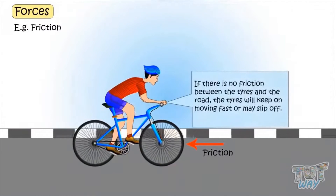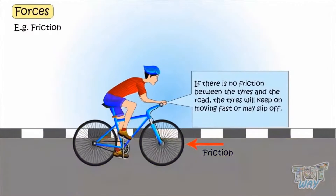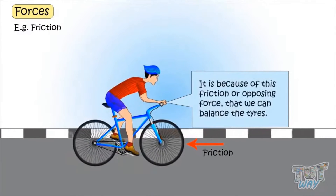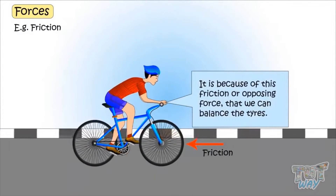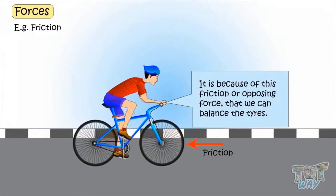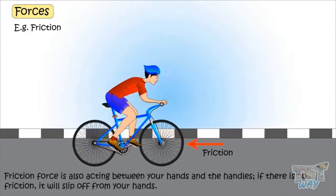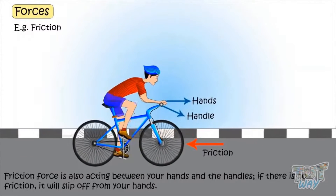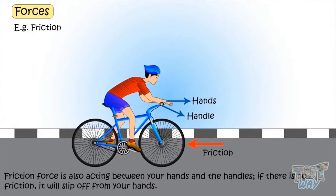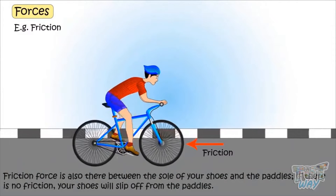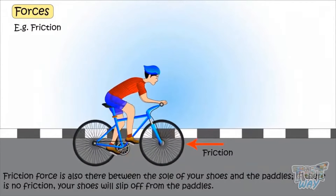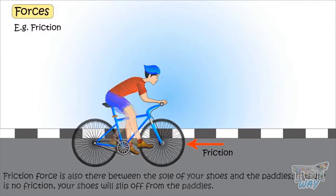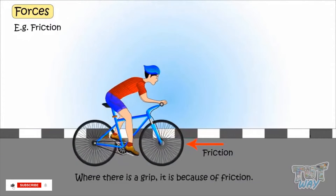If there were no friction between the tires and the road, the tires would keep moving very fast and even slip off. It is because of this friction, or the opposing force, that we can balance the tires. Friction force is also acting between your hands and handles, and between the sole of your shoes and the paddles — if there were no friction, your shoes would slip off the paddles. Everywhere there is a grip, it is because of friction.